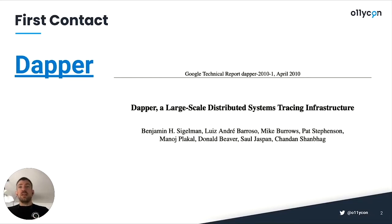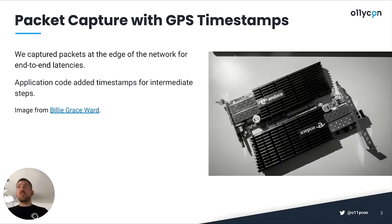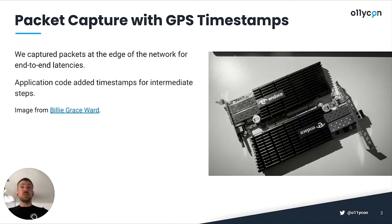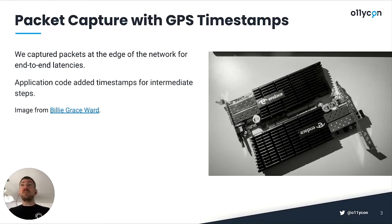My first contact with distributed tracing was contemporaneous with Google releasing their paper on Dapper back around 2010. At the time, I was working in the financial industry at a high-frequency trading firm. We were building new systems to trade on exchanges the firm hadn't previously done business with, and we were very concerned about overall latency — tick-to-trade — where we care about the duration between when we receive information and when our computers act upon it.